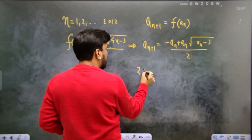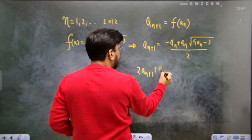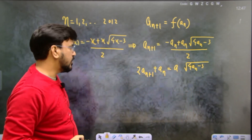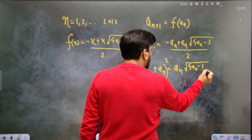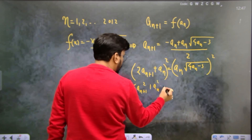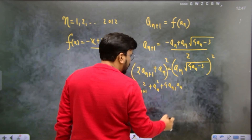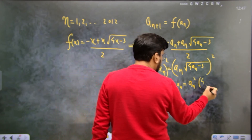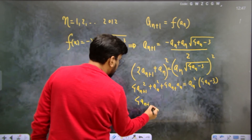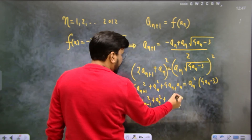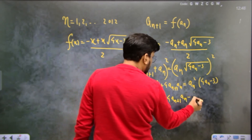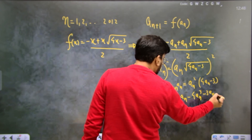We will take 2·a(n+1) and subtract an·root(4an minus 3). Then squaring both sides: 4·a(n+1)² plus an² plus 4·a(n+1)·an equals an²·(4an minus 3). Expanding: 4·a(n+1)² plus an² equals 4·an³ minus 3·an².